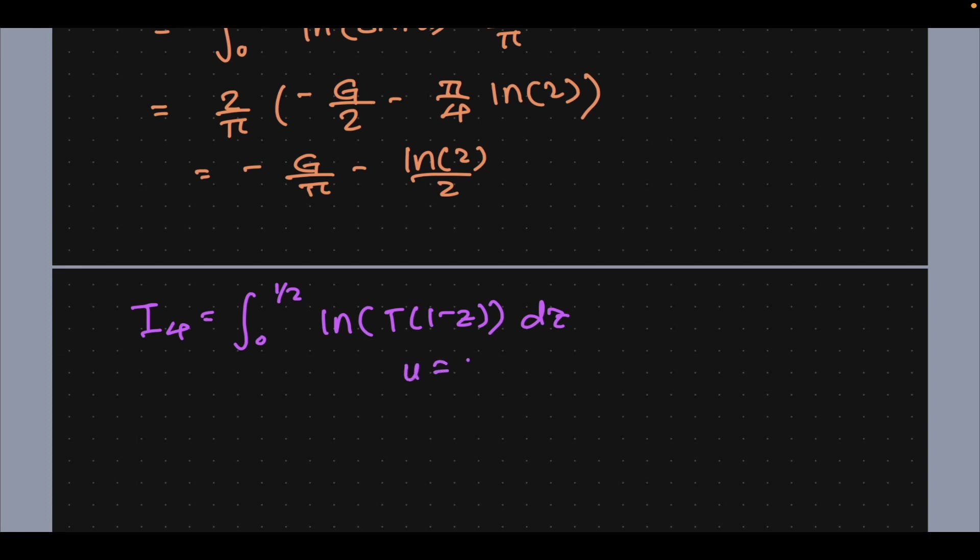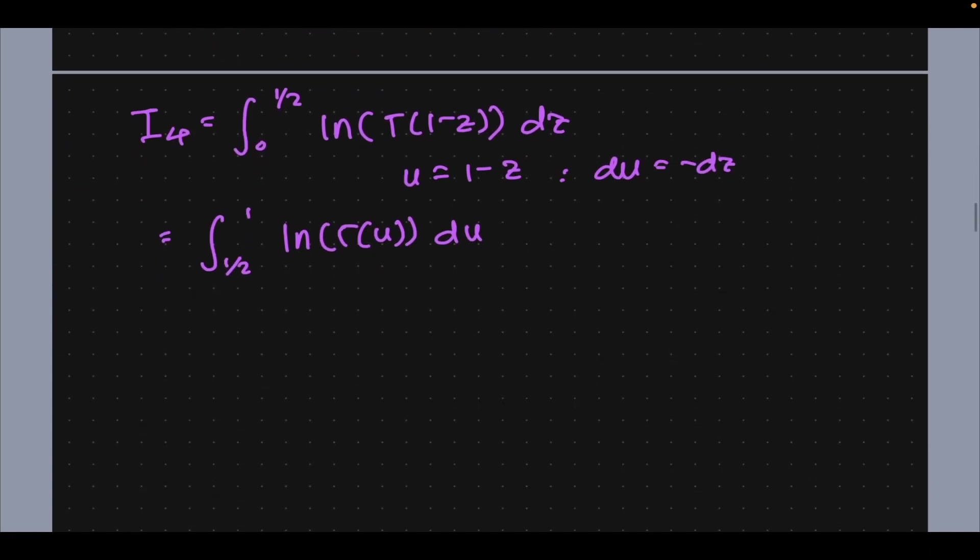Well same as before, u is 1 minus z, du is negative dz, and we're going to get the integral from 1/2 to 1 of natural log of gamma(u) du. Well I urge you to now consider what we've always used or always known: the derivative of the natural log of gamma.